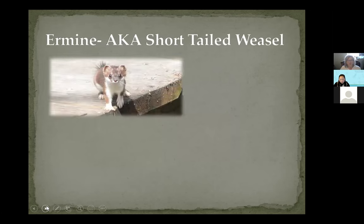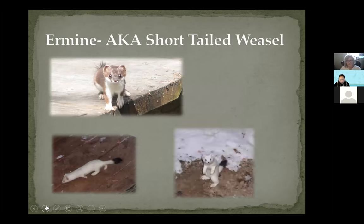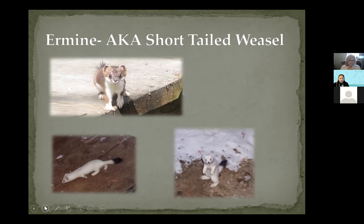The ermine, or short-tailed weasel — so adorable. They turn color in the wintertime to match the snow and escape predators. But what about that black tail? Doesn't that kind of give them away? Why do they have that black tail? Everything in nature has a purpose. Scientists think that the black tail is so far from its head that if it's going to get attacked, a predator will usually go for the black tail instead of the head, so they're more likely to survive. They're also quite small animals but can take down a bird, and oftentimes they're very aggressive around the woodpile and not very afraid of humans at all.